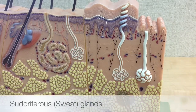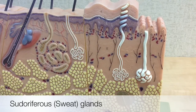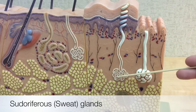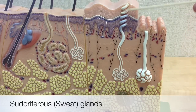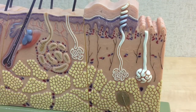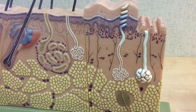Other accessory structures of the dermis include the sweat glands, also called the sudoriferous glands, shown as number 7 on the model. Here's also a sectional view of another sudoriferous gland. These glands excrete sweat, or perspiration, onto the surface of the skin or into hair follicles.